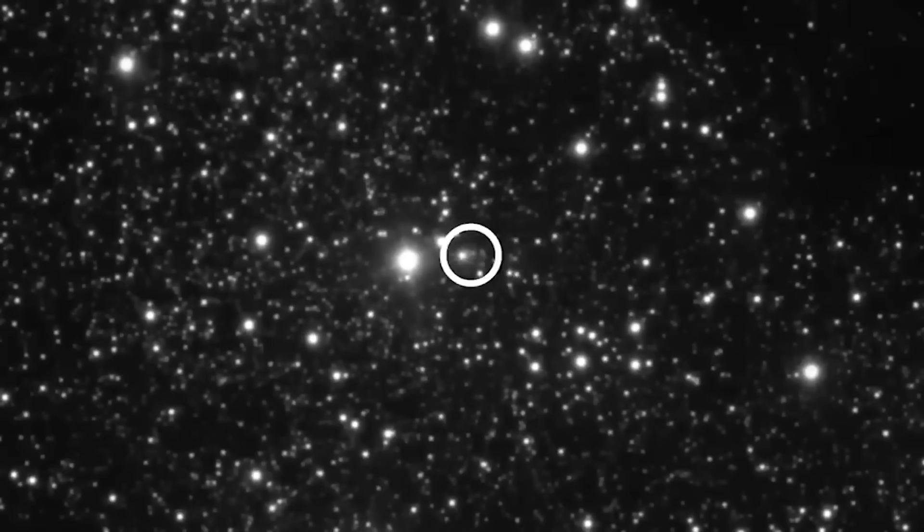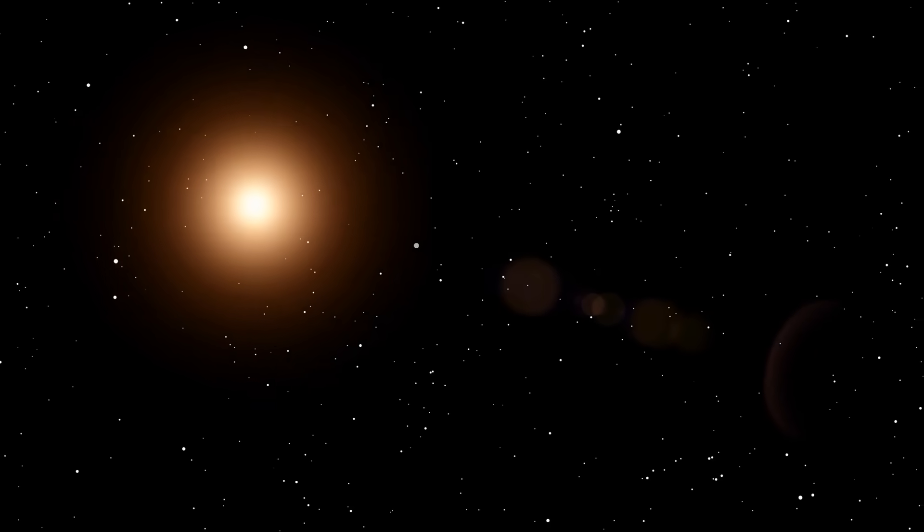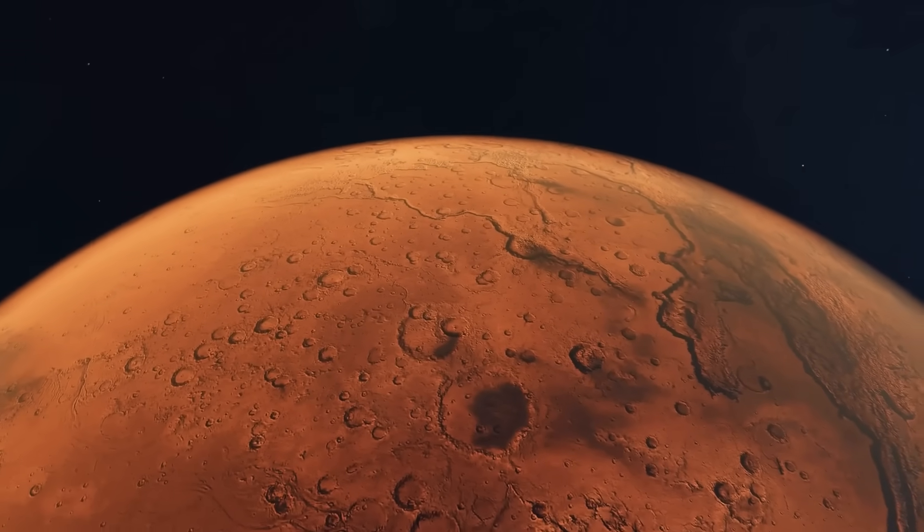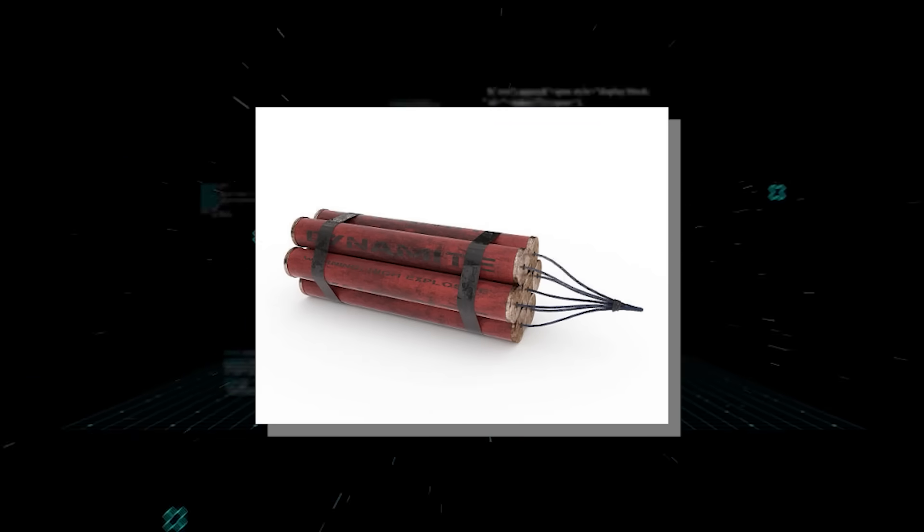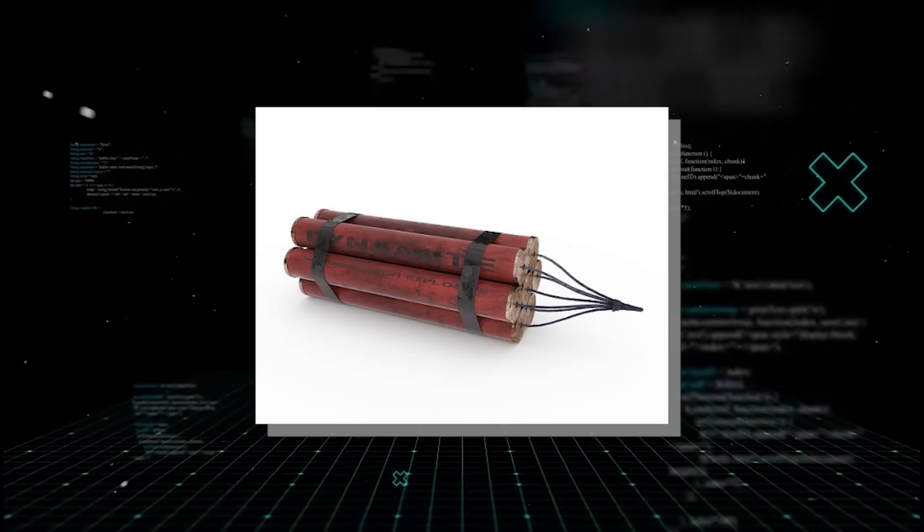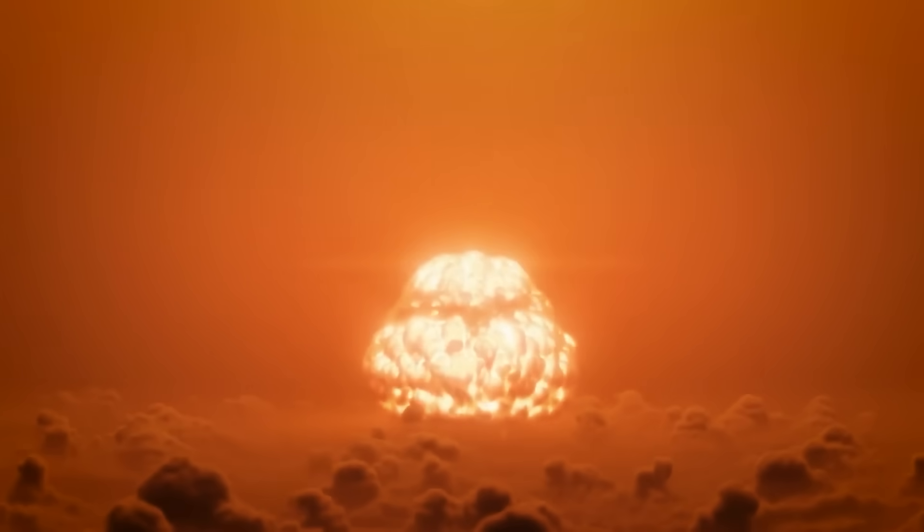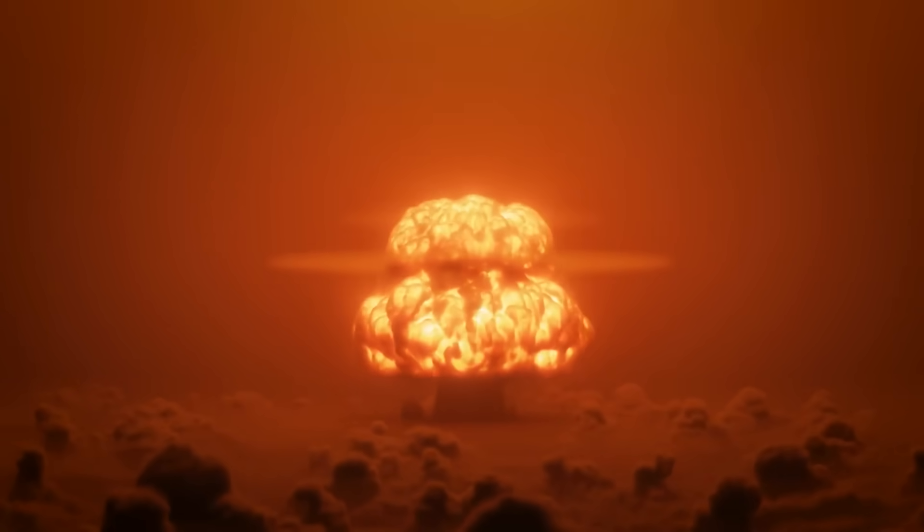Comet 3i Atlas, while significant, is not a planet buster. The data indicates its largest fragment is about two miles across. Still, an impact of this scale on Mars would be a truly spectacular event, releasing energy equivalent to millions of megatons of TNT, an explosion far greater than all of Earth's nuclear weapons combined.